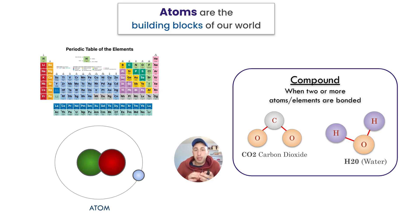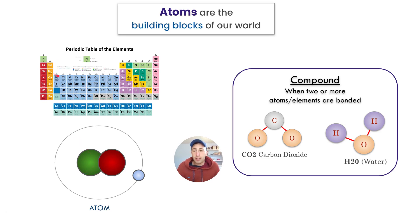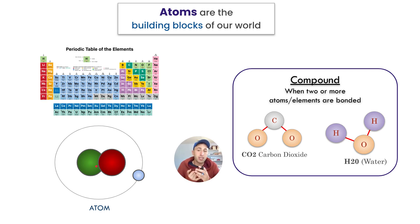Atoms are the building blocks of our world. They are made up of a proton, neutron, and electron. You don't need to really know that, but you have to know there are different atoms. Here are the different atoms on the periodic table, and based on how many protons are in the center, you have different types of atoms: oxygen atoms, carbon atoms, chloride atoms, sulfur atoms.